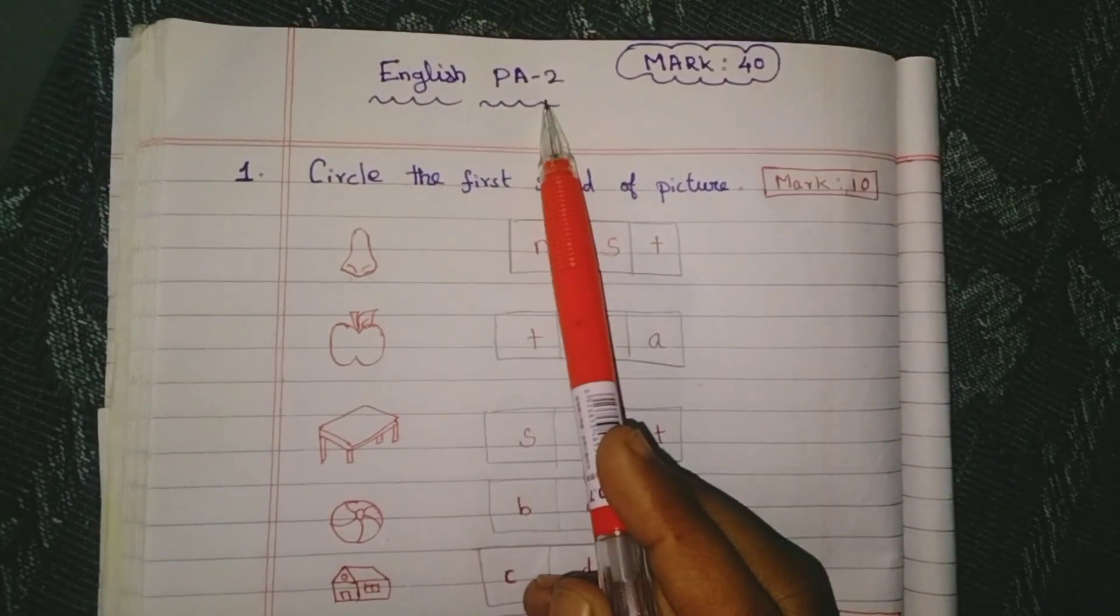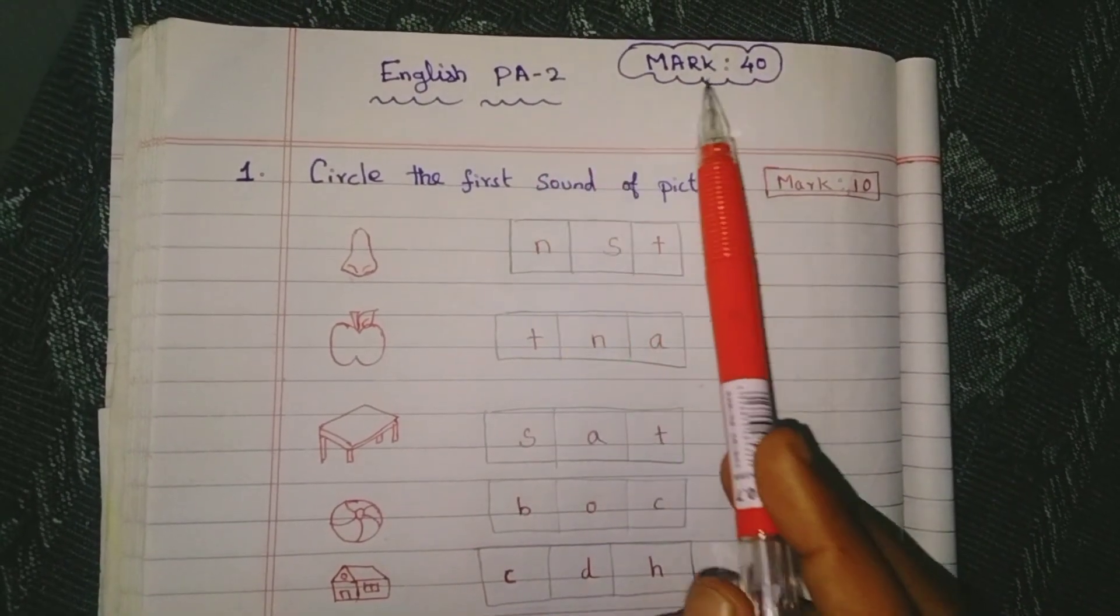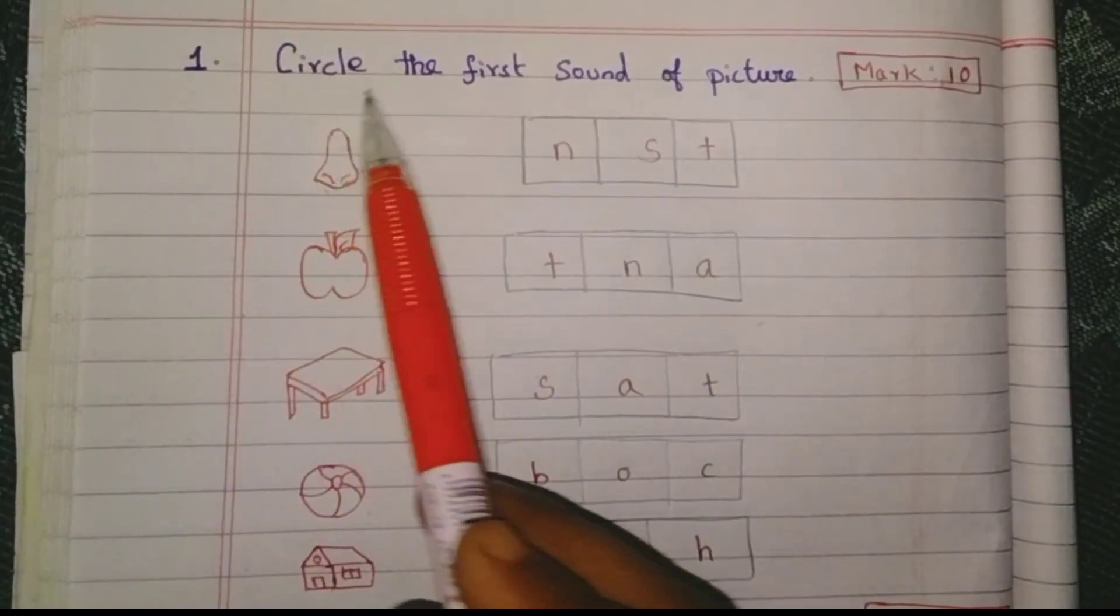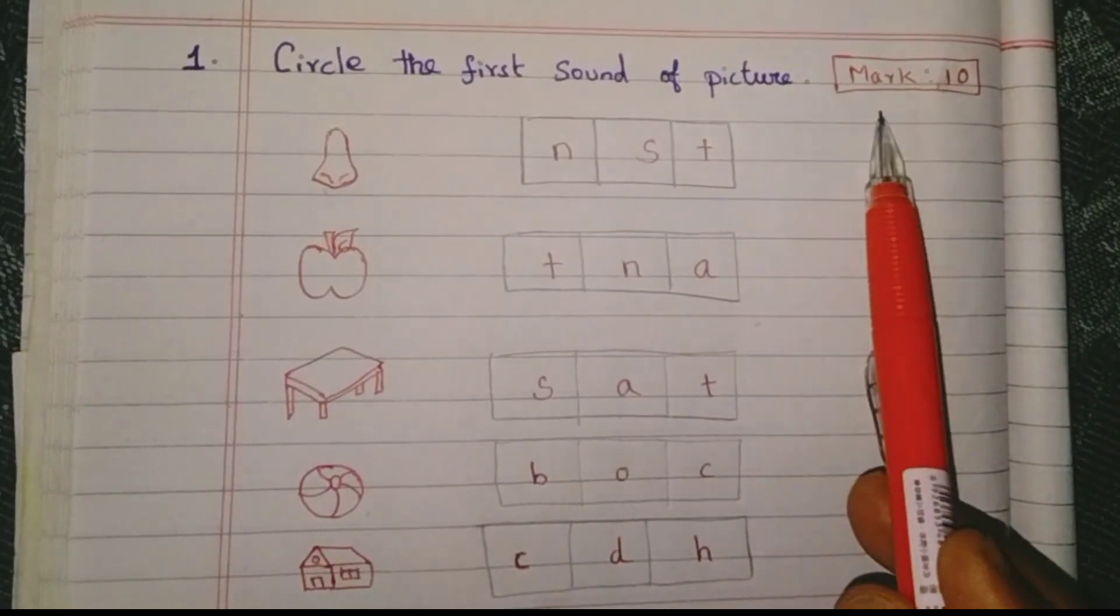Today, English PA2 exam model question paper. Total mark 40. First question, circle the first sound of the picture. Mark 10.